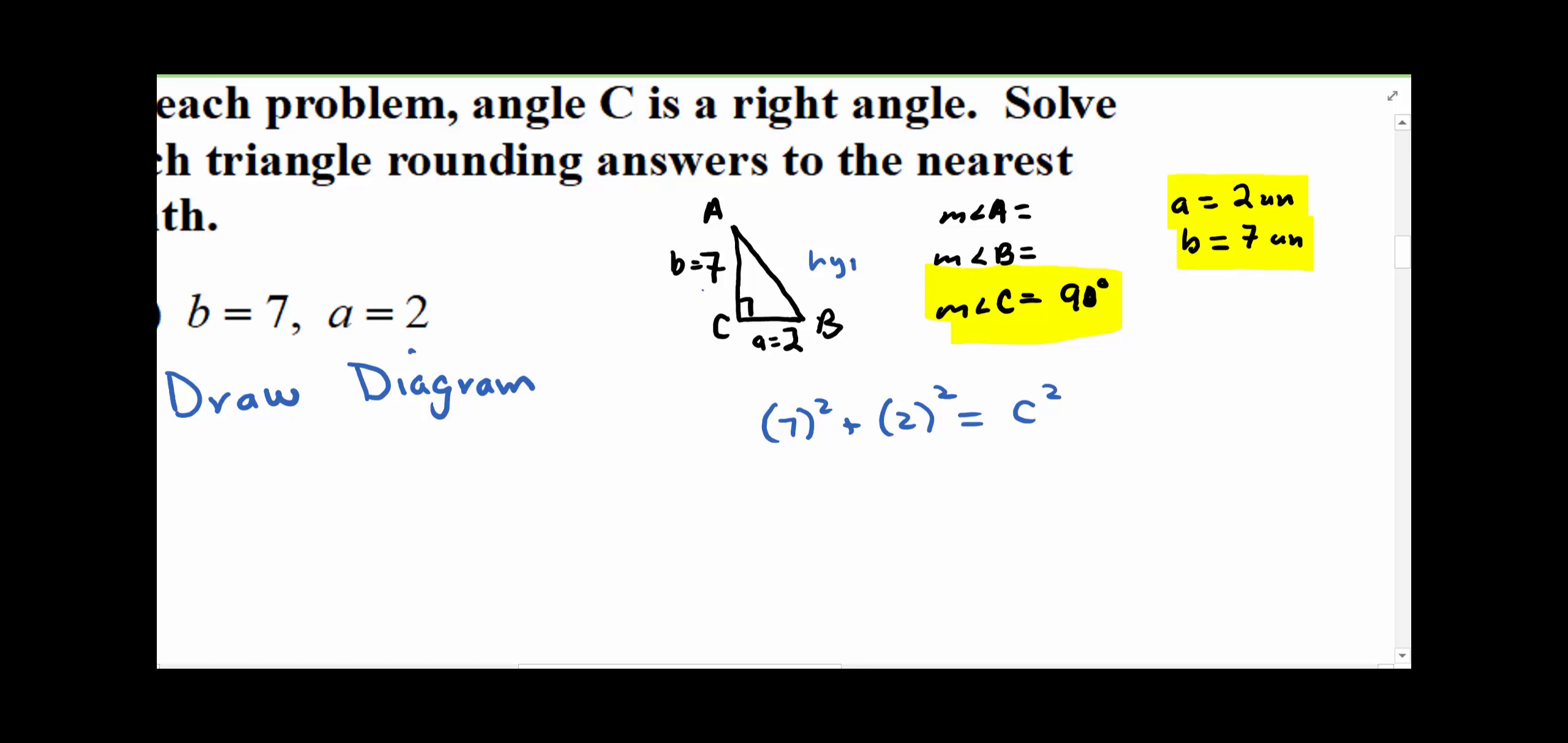So here's the hypotenuse, or side C squared. So 49 plus 4 is equal to C squared, so the square root of 53...